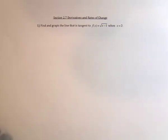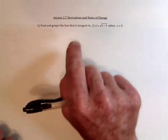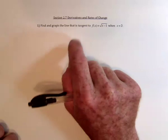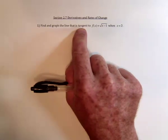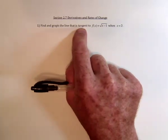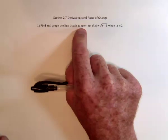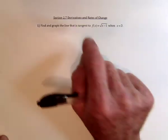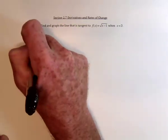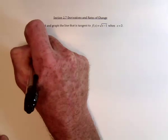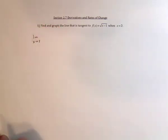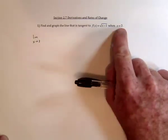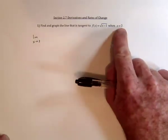We're going to use the definition of the derivative to find the slope for the tangent line. Whenever problems talk about a tangent line, you can use the derivative for finding the slope. There are two forms for finding the derivative when using the definition. I'm going to use the form that takes the limit as x approaches a, or in this case, the number 2.